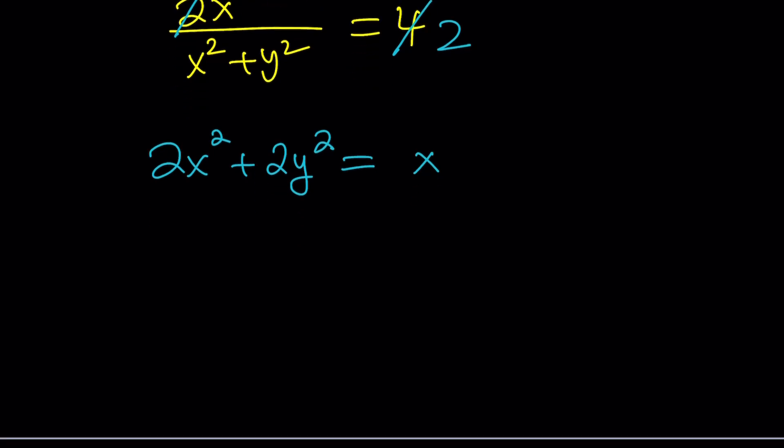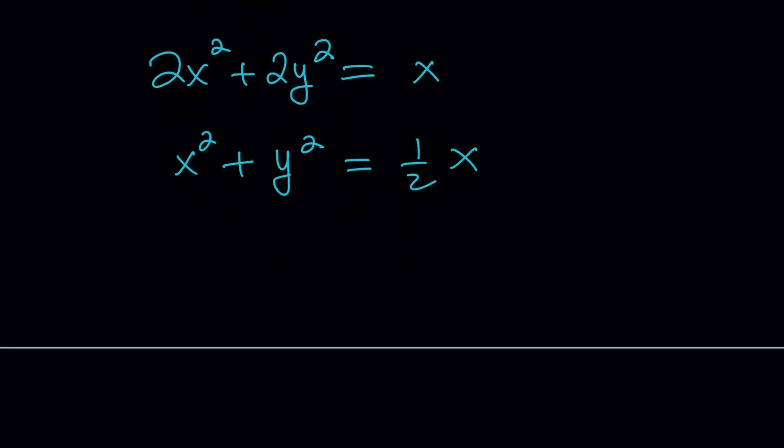But here's what we're going to do. Divide everything by 2, because I want to get the coefficients of x squared and y squared to 1. I want to bring them to 1. And on the right hand side, I'm getting 1 half x. And if I bring over the 1 half to the left, guess what this is? This is a circle. Yes. Isn't that awesome? This is just a circle.